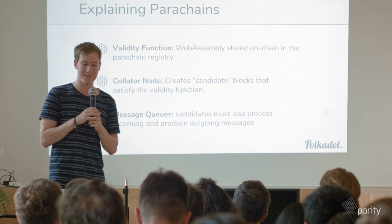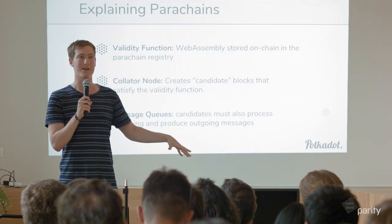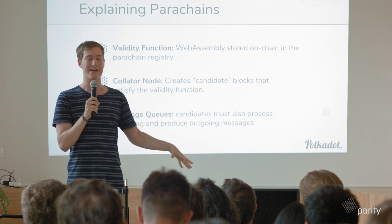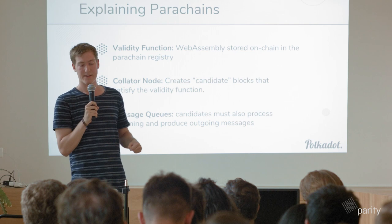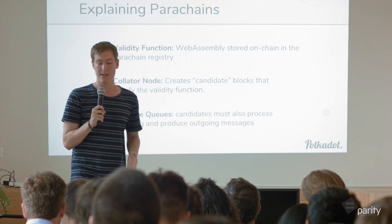To explain parachains: it's basically three parts — a validity function, a collator node, and a message queue. The validity function is a piece of WebAssembly that takes a block header and a proof — like a set of accounts touched by the block's transactions, or even a zero-knowledge proof — and evaluates to true or false. The collator node creates candidate blocks that will pass this validity function. And then there are message queues between parachains — that's how we achieve the interoperability part.